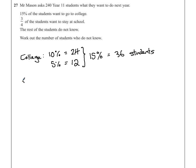If we look at how many people want to stay at school, we're dealing with fractions. Three quarters. Well, if we can work out what one quarter is, three quarters should be fairly easy after that.